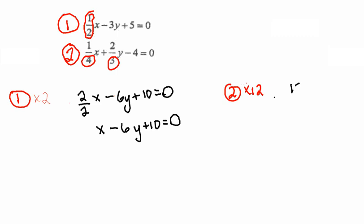So I'm going to get 12 over 4x plus 24 over 3y minus 12 times 4 is 48. And then when I reduce my fractions, 12 over 4 is 3. So 3x plus 24 over 3 is 8,